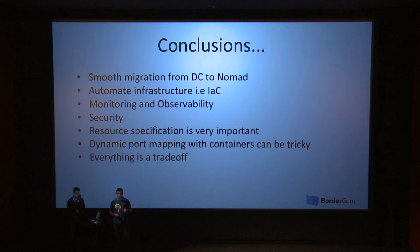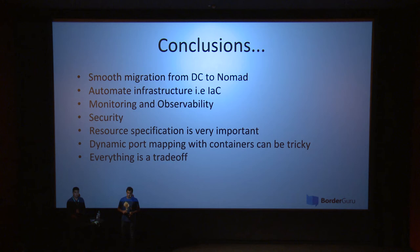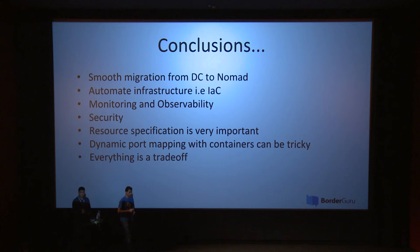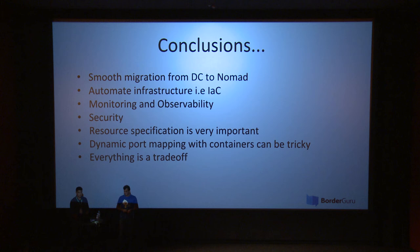We use Packer with Ansible to provision the AMIs and Terraform to deploy them and create other resources like ALBs. Another thing we learned is that monitoring and observability should never be an afterthought — you need insight into your cluster. Consul, Nomad, and Fabio all support telemetry and emit metrics via StatsD or Prometheus. It's highly recommended to set up monitoring and observability. For production, it's also important to have proper security: both Nomad and Consul support ACLs for access control and SSL for encryption in transit.